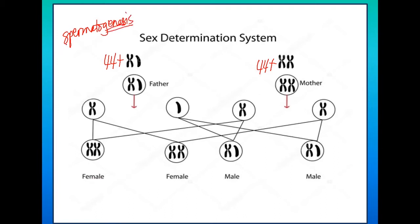For the egg cell to be formed, that process is called oogenesis — 'oo' refers to the oocyte, the cell involved in this process. Both spermatogenesis and oogenesis fall under the topic of meiosis, which you learned in grade eight. So sperm forms through spermatogenesis and egg cells form through oogenesis.